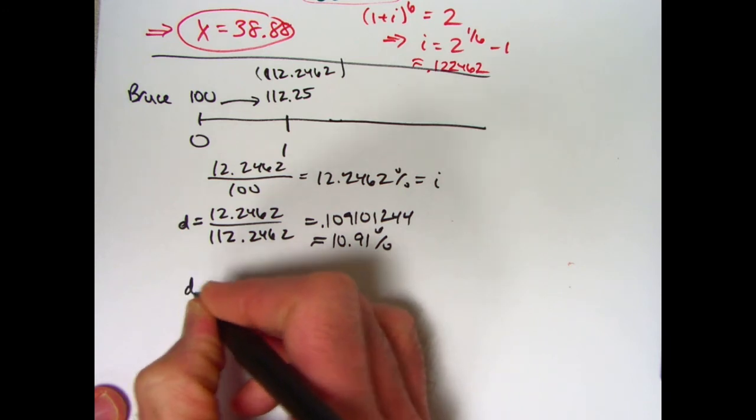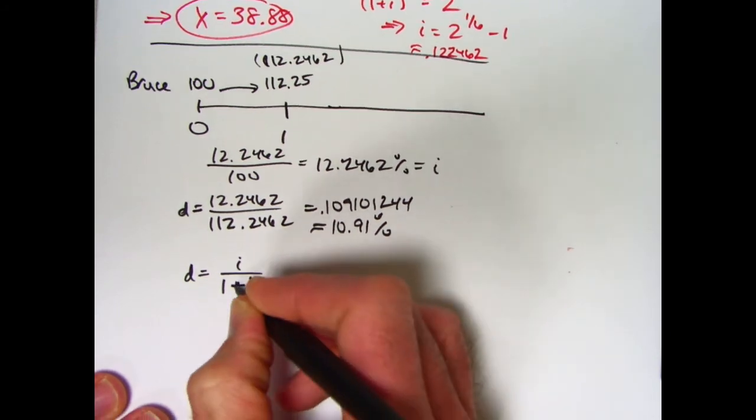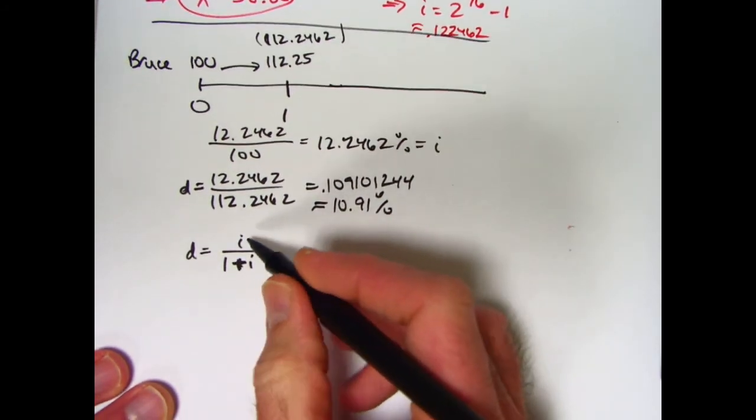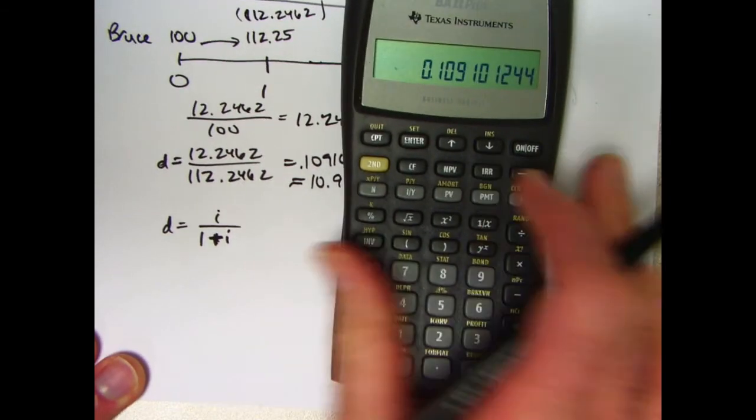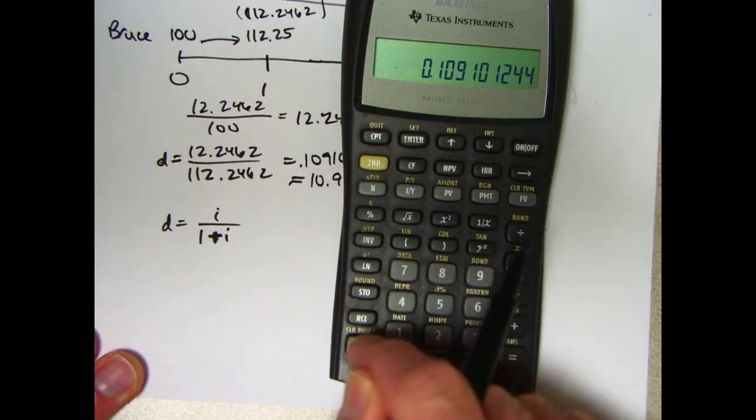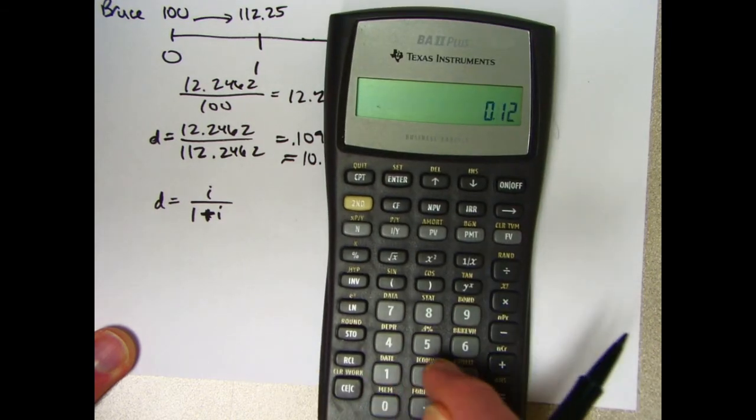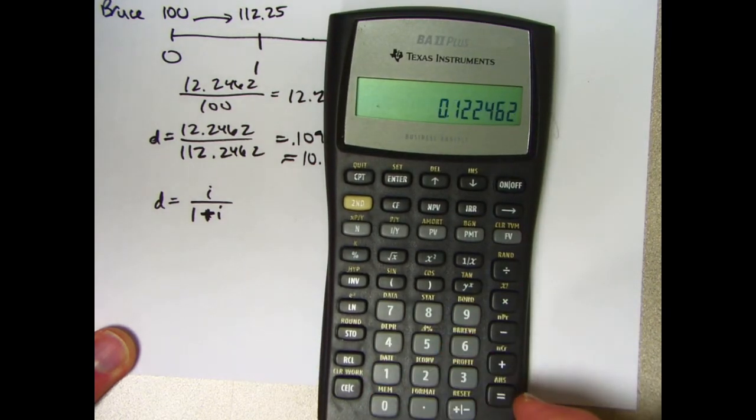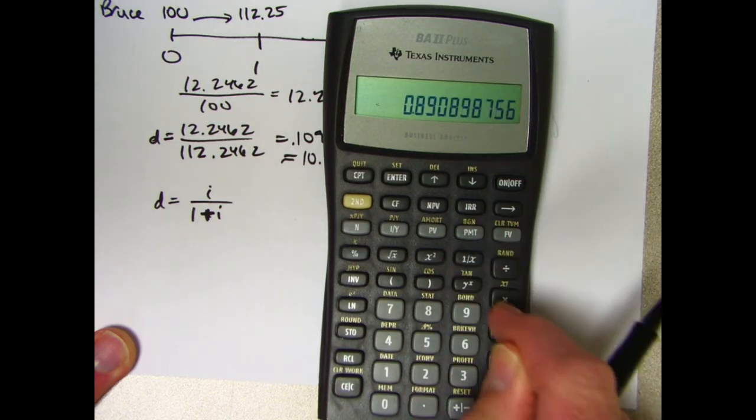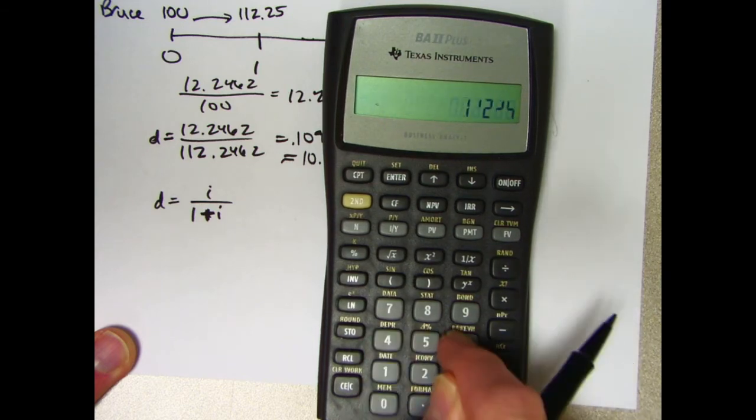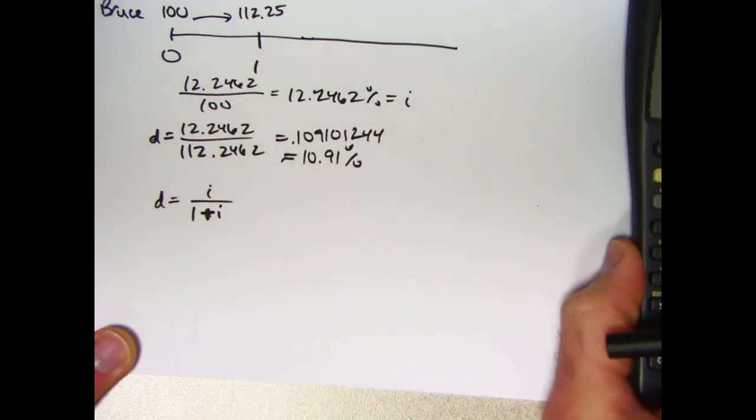Essentially here, d is i over 1 plus i. You know, if we were depositing 1 instead of 100, this would be the amount of interest earned, this would be the ending amount. That ratio between i and d, that relationship does hold. Let's see. So again, let's confirm this. i is 0.122462. If I add 1 to that, take its reciprocal and multiply by 0.122462, I do get the same thing, 10.91% for d. So that's a relationship between d and i.